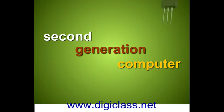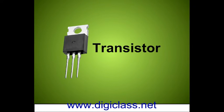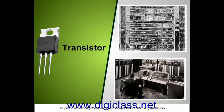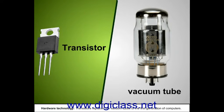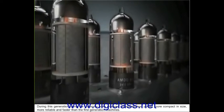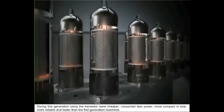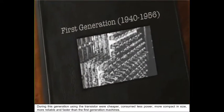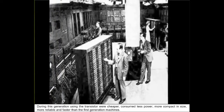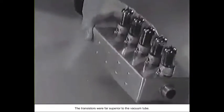Second-generation computers: the period of second-generation computers was 1956 to 1963. Using transistors, this hardware technology replaced the vacuum tubes of the first generation. During this generation, transistors were cheaper, consumed less power, were more compact in size, more reliable, and faster than first-generation machines. The transistors were far superior to the vacuum tube.